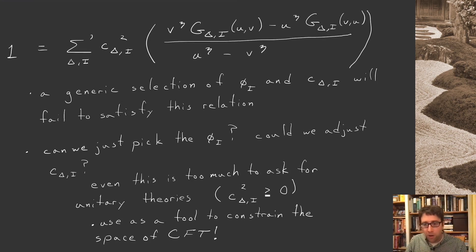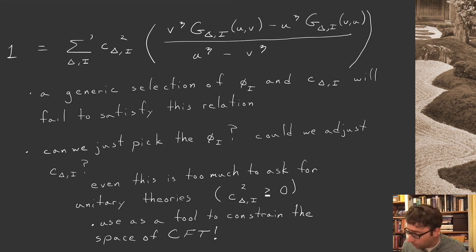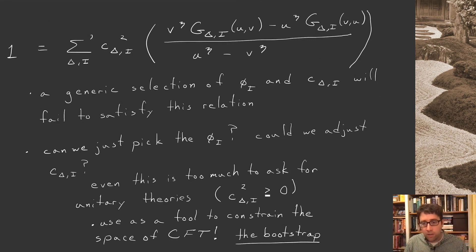Because of the positivity constraint c_{delta_i}² > 0 in unitary theories, we can use the crossing symmetry constraint as a tool to constrain the space of possible conformal field theories. This is a very interesting observation that has been used in a lot of current research and also research going back 20 or 30 years. This all goes by the name of the conformal bootstrap.